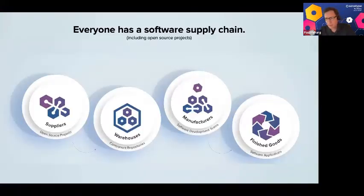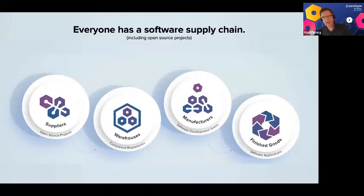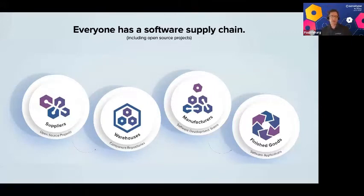If you look at the software supply chain, on the right-hand side we have finished goods — the applications we're creating. The manufacturers and processes creating that are our software development teams. The warehouses are the component repositories or source repositories where we store parts of the application. Our suppliers, in this case, are open source components.